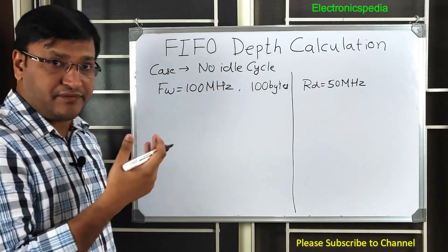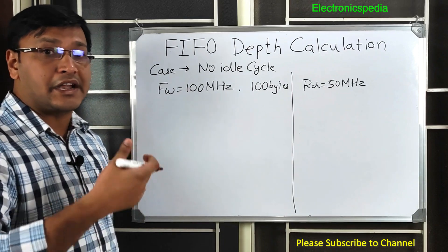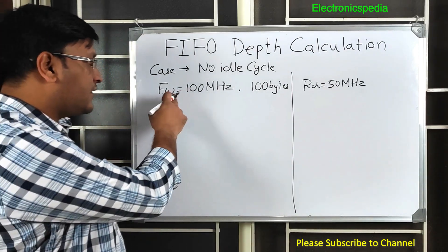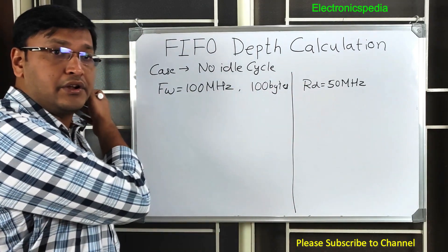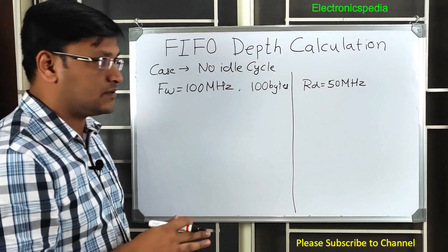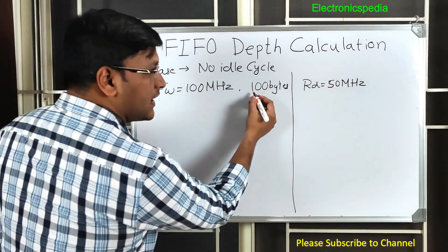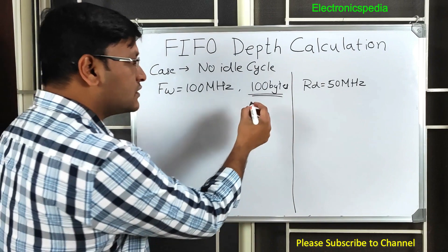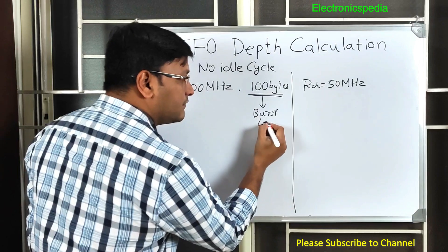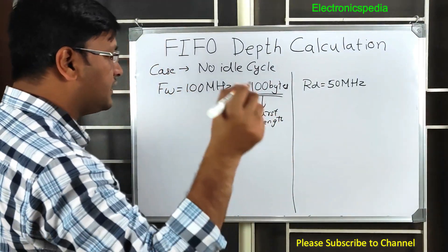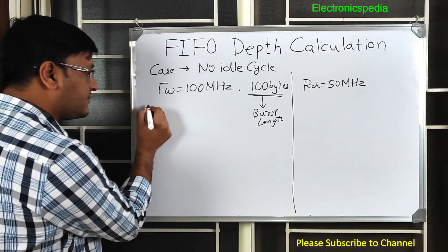A FIFO cannot have infinite depth — it has to be a realistic number because it must be implemented in hardware. If the write is at 100 MHz and the read is at 50 MHz and you want continuous data transfer, it has to be bounded. That's why I'm taking 100 bytes as the example — this is what we call the burst length.